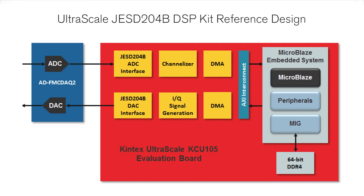The DAC-Q FMC card is a dual-channel 14-bit 1-gigasample-per-second ADC and a dual-channel 16-bit 2.8-gigasample-per-second DAC that uses an eight-lane JESD204B interface. The reference design we are showing uses the Xilinx JESD204B IP core to interface to the Analog Devices data converters using four JESD204B lanes for the DAC and another four lanes for the ADC, for a total of eight lanes at 10-gigabits-per-second line rate. This design is captured using Vivado IP Integrator and serves as a working starting point that can be reused or modified for rapid prototyping and applications.